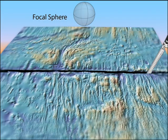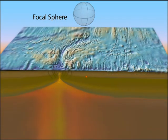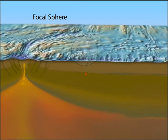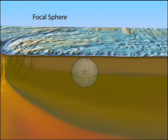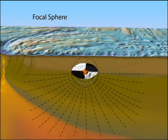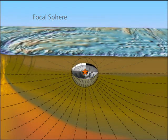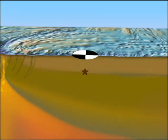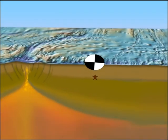To do this, it is convenient to imagine a sphere, called the focal sphere, surrounding the earthquake hypocenter. Rays that travel to distant stations will radiate from the earthquake through the lower hemisphere of the focal sphere. To keep things simple, let's look at two cross sections at more or less right angles.